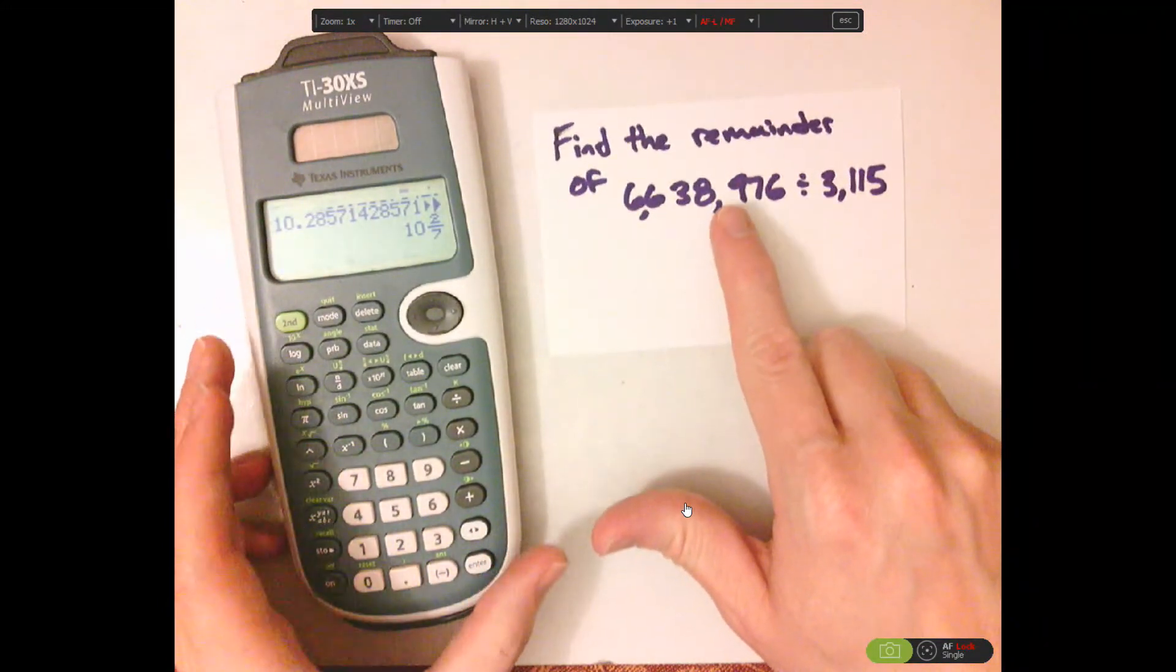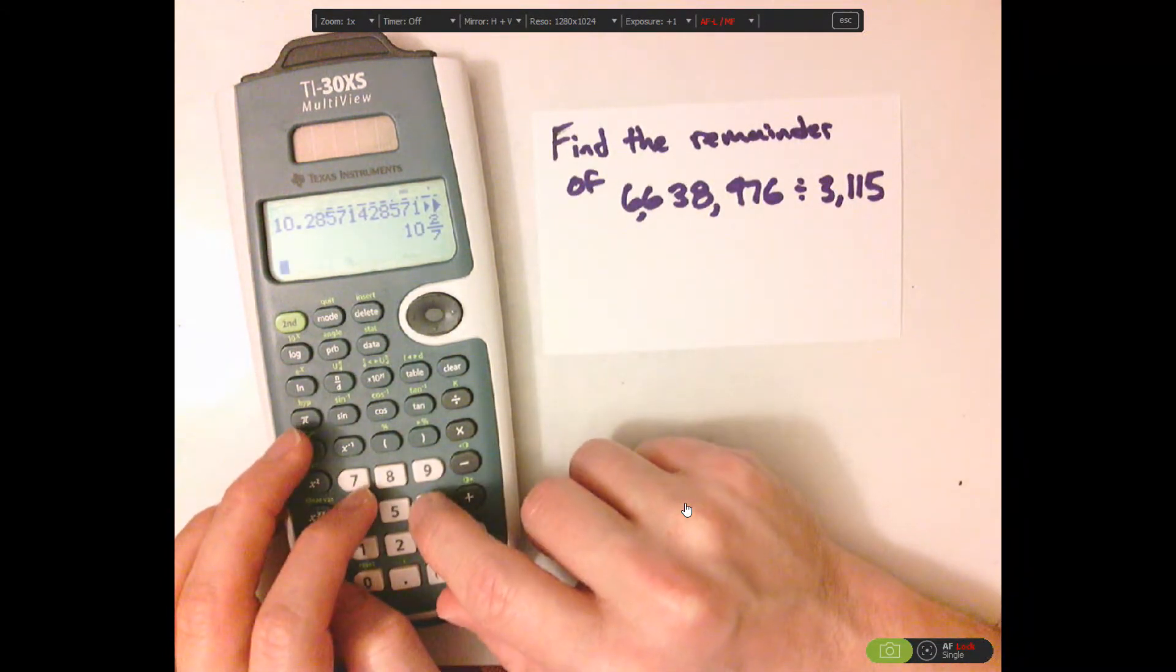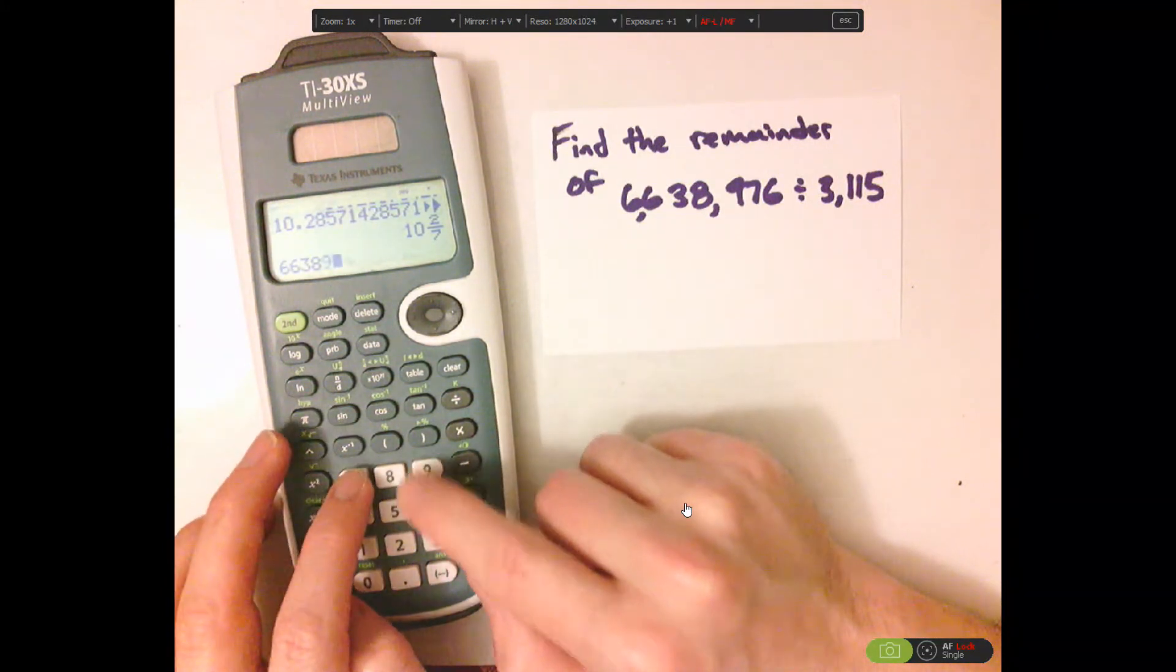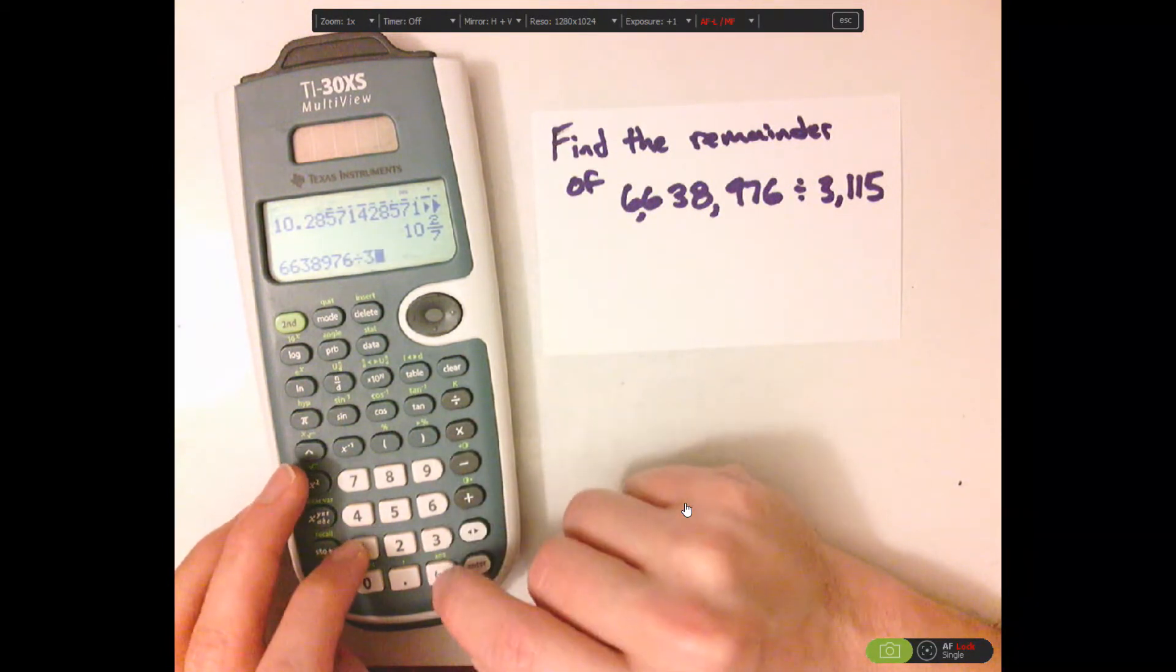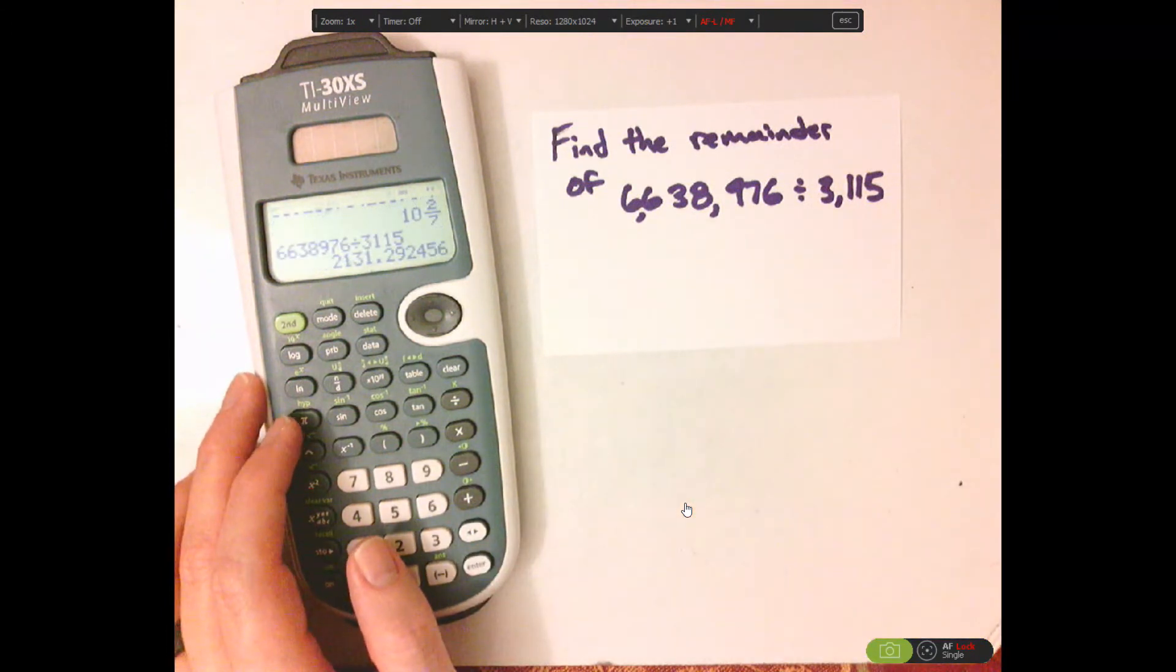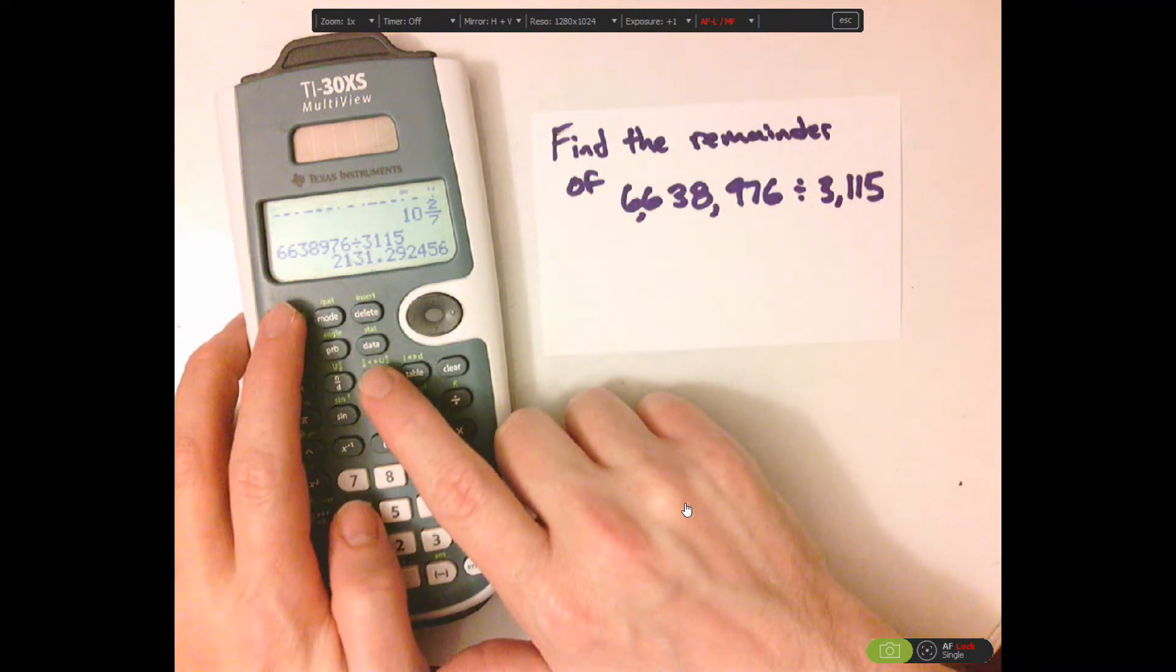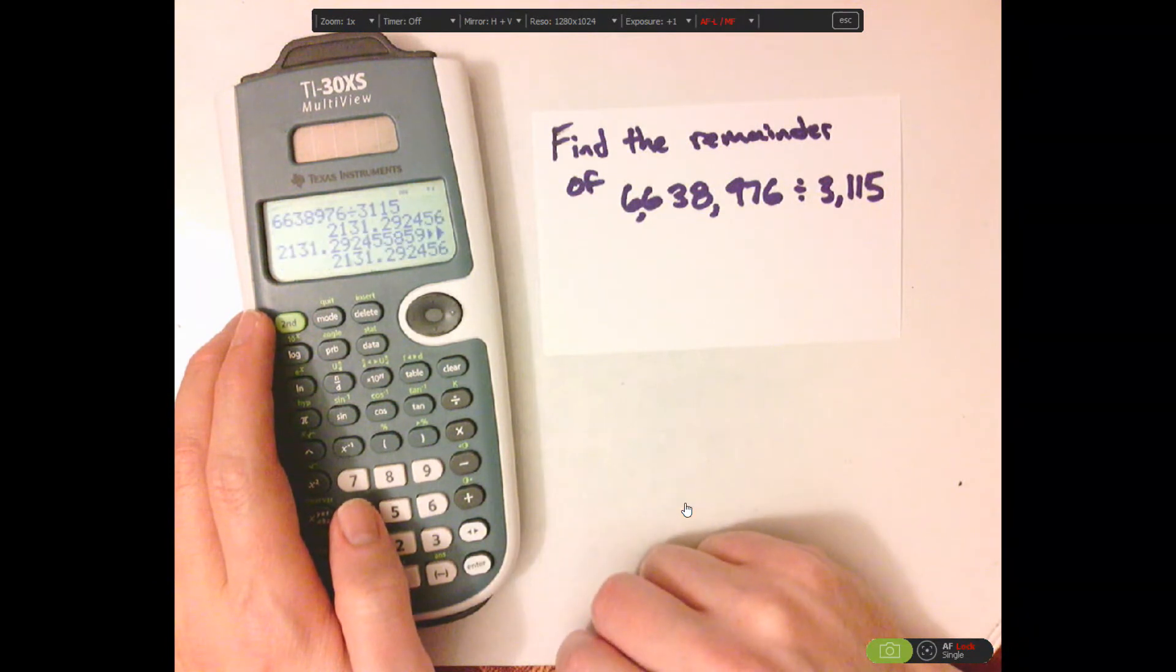Now, I'm going to take this, I'm going to do the same thing with this huge number. So, 6,638,976 divided by 3,115. I do that, I get this amount right here, and I'm going to convert it to a mixed number. And it's still a decimal.